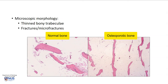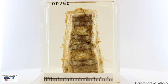Microscopically, we can see that the bony trabeculae are much thinner in the osteoporotic bone compared to the non-osteoporotic bone, and there may also be fractures and microfractures. Hence, in summary, we are looking at a longitudinally sectioned vertebral column and we can see that there are compression fractures of the vertebral bodies on a background of osteoporosis, where the cut surface of the vertebral bodies appears somewhat more porous and spongy than usual, and there is accompanying thickening of the intervertebral discs. Thank you.